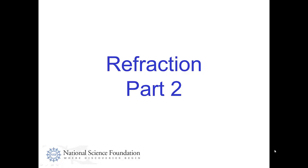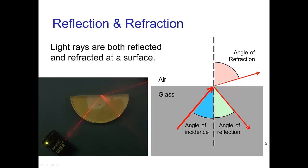Refraction Part 2. When light rays reach the interface between two materials—say light passing through glass reaching the surface—some of the light is reflected from that surface and some passes through and is refracted.